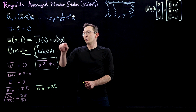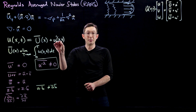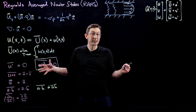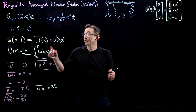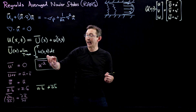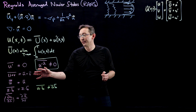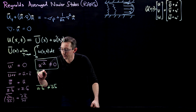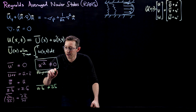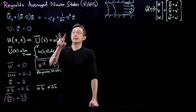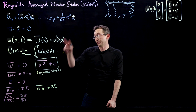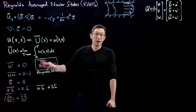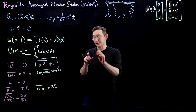Even though the fluctuations have zero mean, their variances and higher moments are non-zero — they're non-trivial and important in the dynamics. We have to keep track of these higher moments, these variances. They are also called Reynolds stresses, because they have the units of stress — just like the diffusion term in the Navier-Stokes equations. They act just like diffusion, as we'll see shortly.